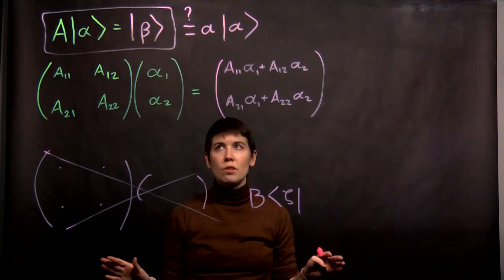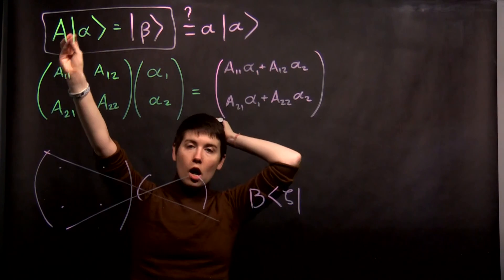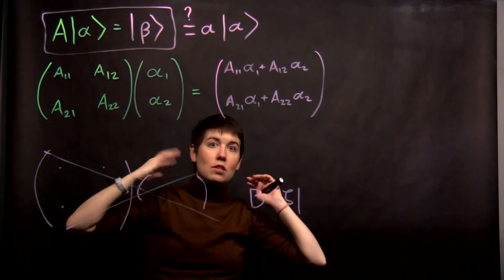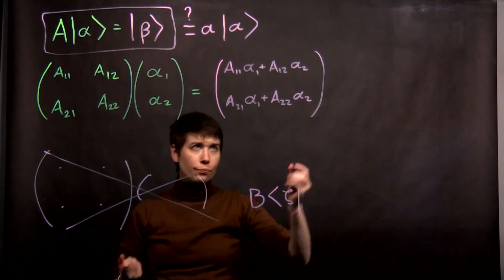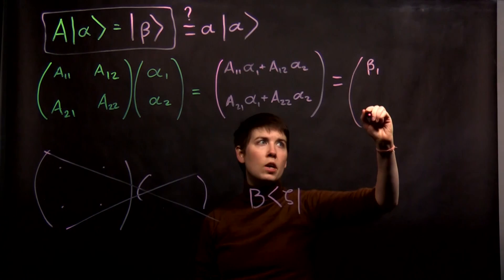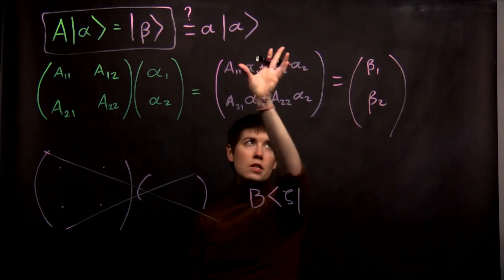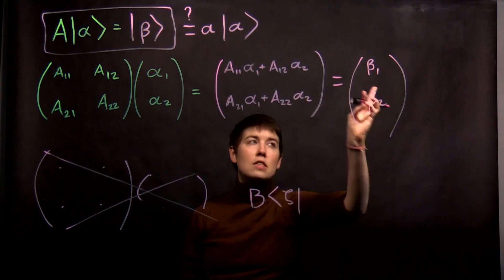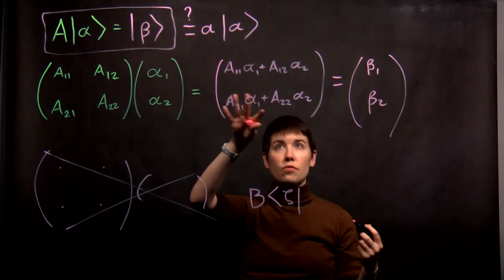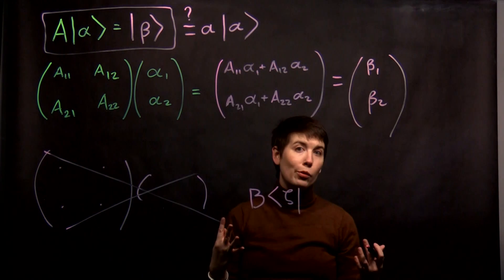There will be other videos to unpack that fully. Here I just wanted to establish that an operator followed by a ket is executed by matrix multiplication. We can write the result as beta 1 and beta 2, set each entry equal, and solve arithmetically if we're trying to find specific values. In later videos we'll see why we would want to do that.